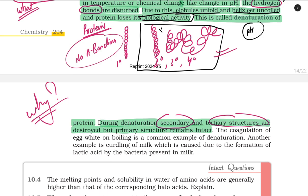Now, what are the examples? Do we know any example in our day-to-day life? Yes, there are examples like the coagulation of the egg white on boiling is a common example of denaturation.